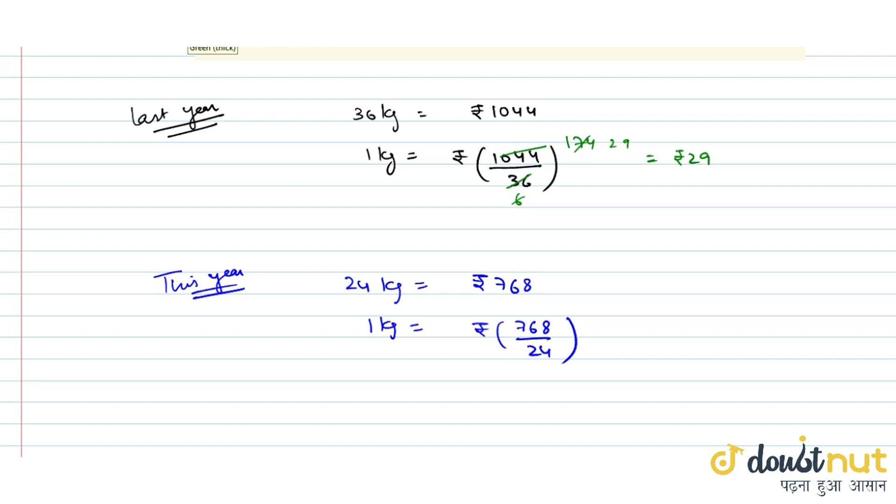If we divide, 768 divided by 6 is 128, and 24 divided by 6 is 4. Then 128 divided by 4 is 32. So the cost per kg this year is Rs. 32.